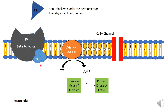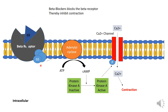Cyclic AMP is responsible for the activation of protein kinase A. This activated protein kinase A leads to the phosphorylation of L-type calcium channels. Due to this phosphorylation, the calcium channel will open and calcium enters the cell intracellularly. This calcium then leads to the contraction of the heart muscle. Beta blockers bind with the beta receptor and ultimately inhibit this entire process, thereby inhibiting contraction.